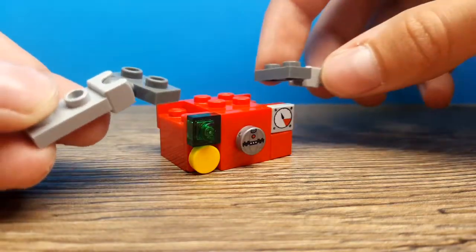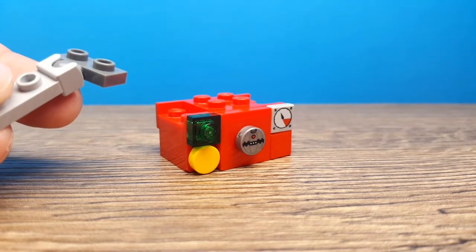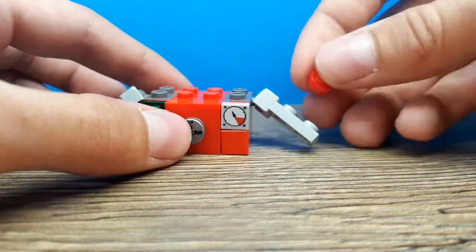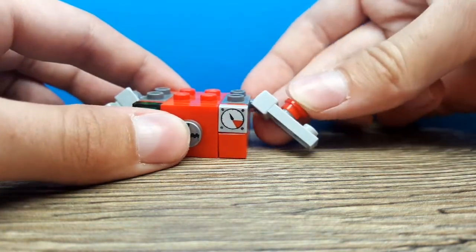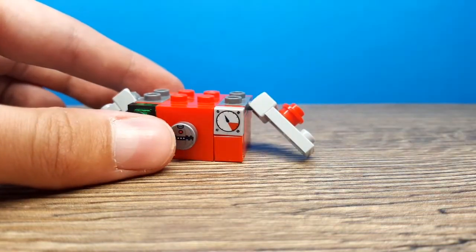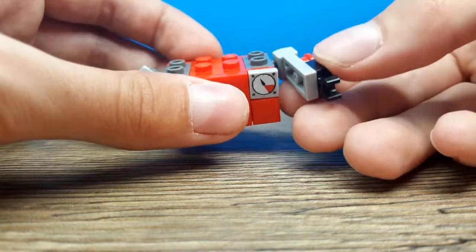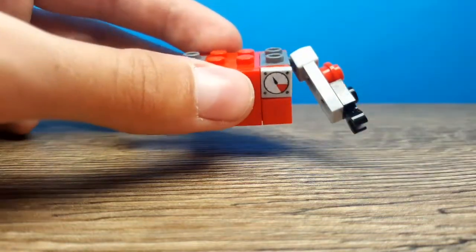Put these 2 pieces on either side for the arms. Then add this 1x1 red stud on either arm on this place. Add a black clip on either arm on this place.